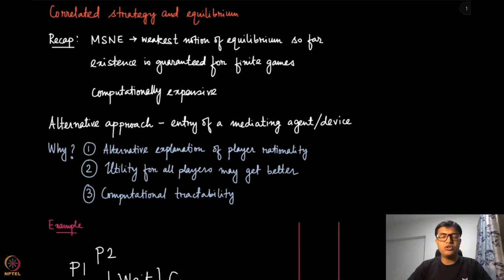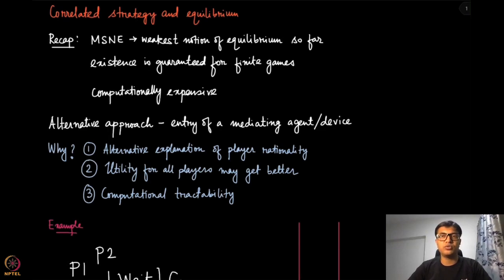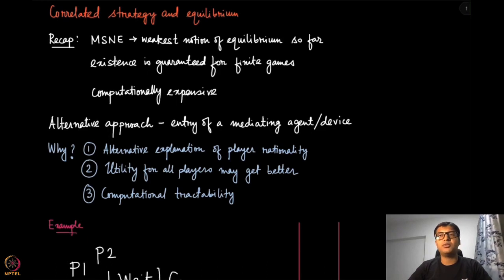But does that really reflect how friends decide what to watch? Sometimes they might decide together — go to football today and cricket tomorrow — rather than taking independent decisions and ending up watching different games. If they cannot agree, they can just toss a coin and decide based on the outcome which match to watch.